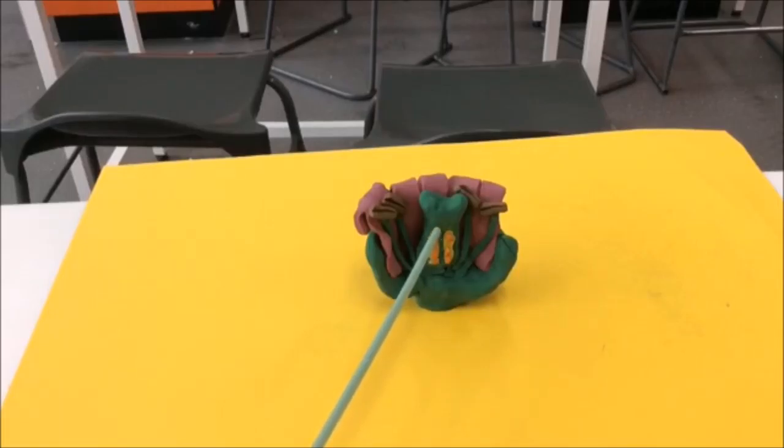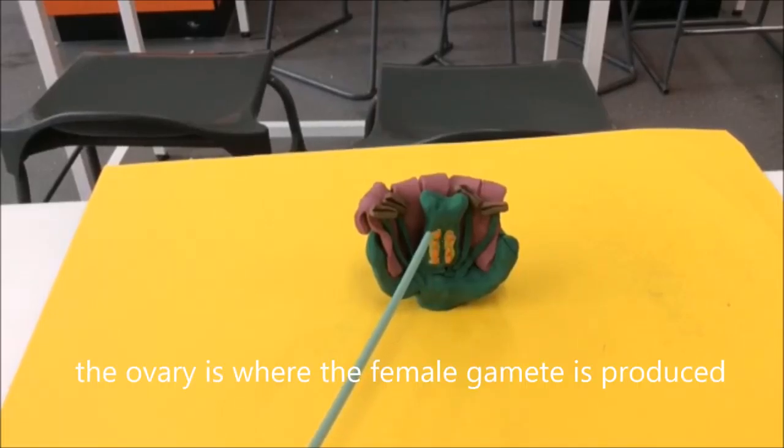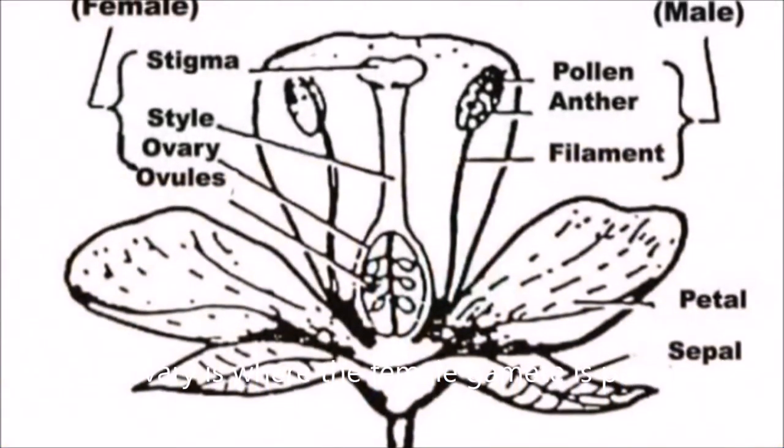And this is the style, which connects the stigma to the ovary. The ovary is the place where the female gametes are produced.